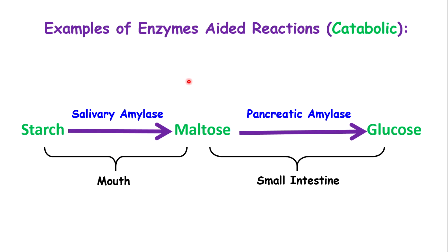Now for the bonus — some examples of enzyme-aided reactions. Starch, for example, is a nutrient, and in our mouth, starch is broken down into maltose by the enzyme salivary amylase. Maltose is a sugar — notice the -OSE suffix. The maltose is then taken to our small intestine where it is broken down by pancreatic amylase into glucose. So the end product of the catabolic reaction of starch — or carbohydrate — is glucose.